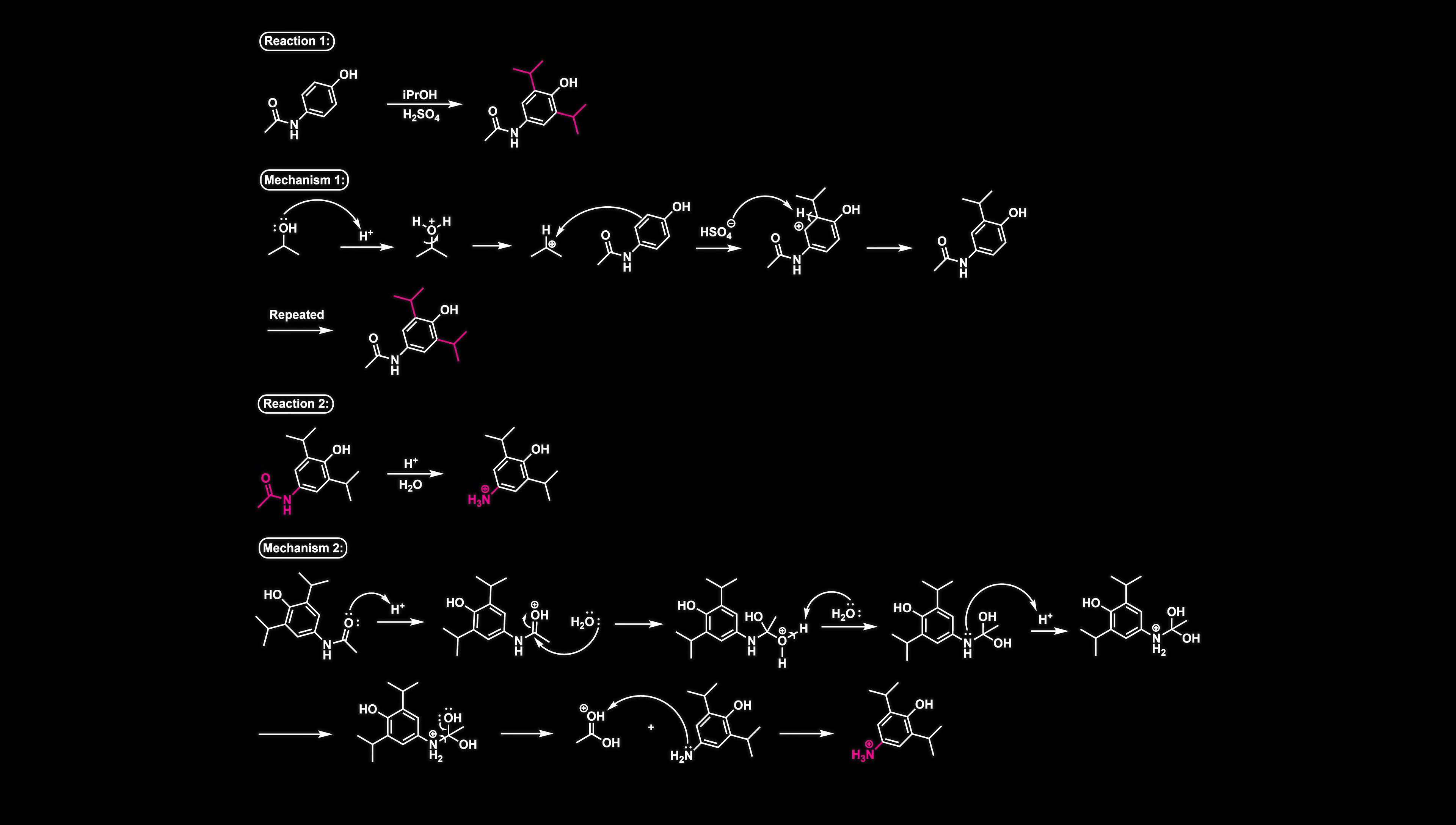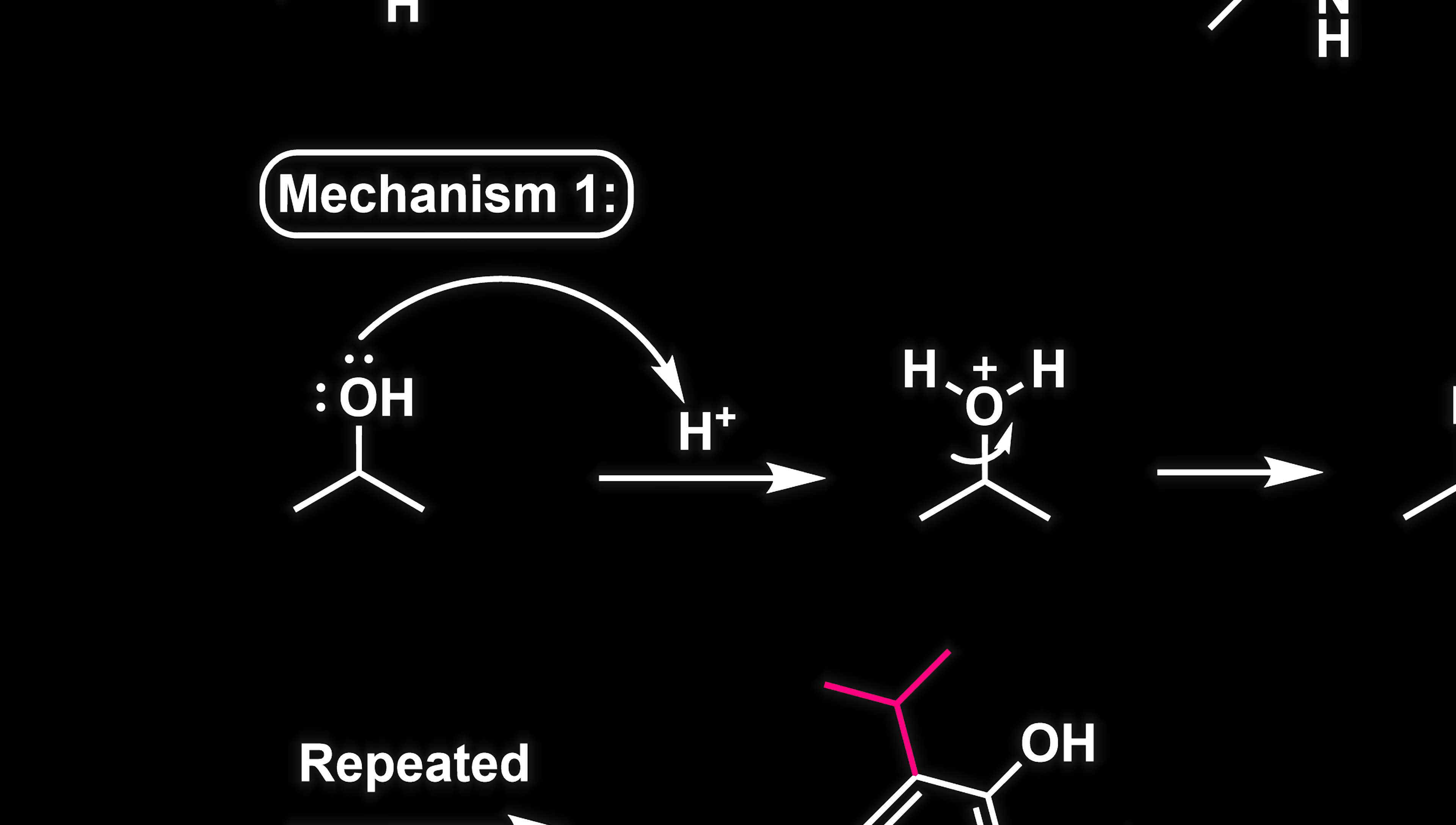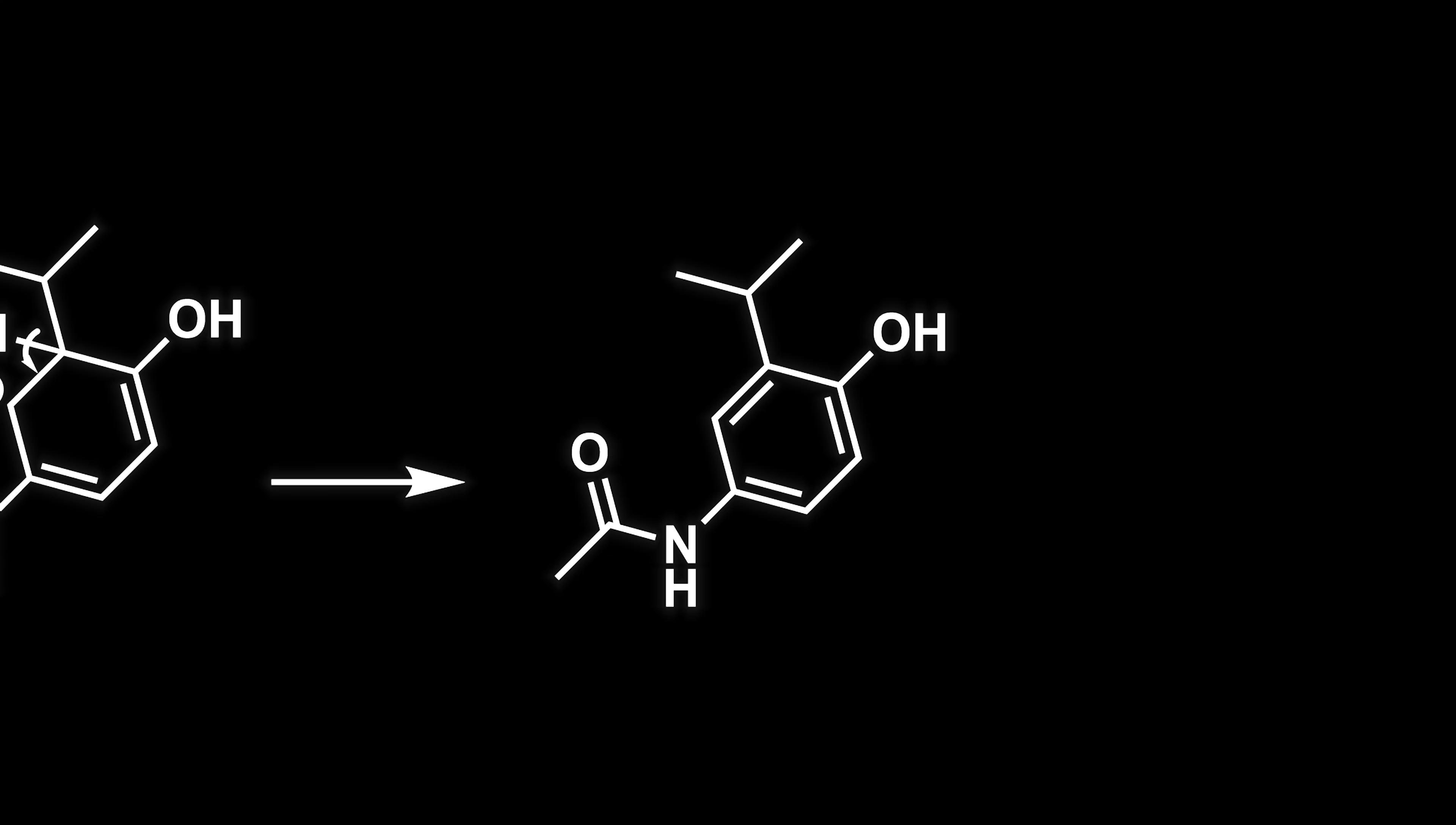You're just going to hold your horses really quick because we need to go over the mechanism. This is a one pot synthesis but there's four main mechanisms happening. Starting with the first reaction, we're going to take acetaminophen and react it with isopropyl alcohol and sulfuric acid. This will do a bis-alkylation, which means this will undergo a Friedel-Crafts alkylation where the two highlighted red isopropyl groups will be added. First, isopropyl alcohol will be protonated by the sulfuric acid. Water can then leave as a leaving group and a carbocation will be created. This can undergo electrophilic aromatic substitution and these isopropyl groups will be added on.